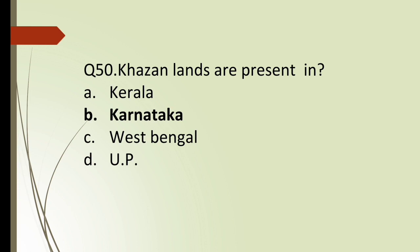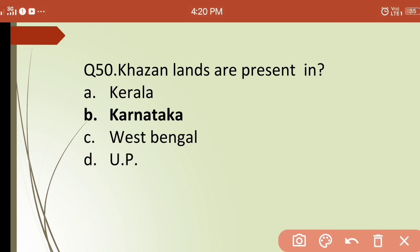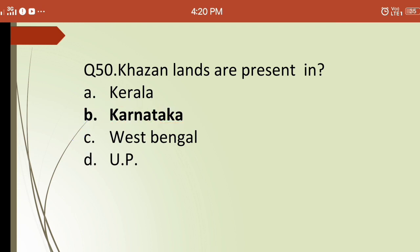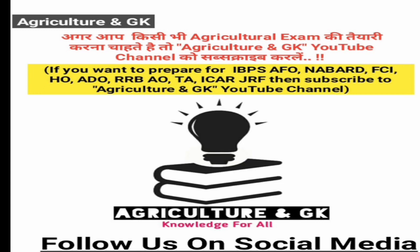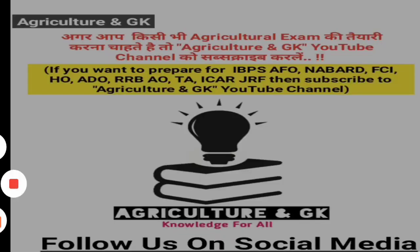Fiftieth question: khazan lands are present in which state? Options are: (a) Kerala, (b) Karnataka, (c) West Bengal, (d) Uttar Pradesh. The correct answer is (b) Karnataka — khazan lands are present in Karnataka. I hope this video helped you. Please like, share, and comment, and subscribe to our channel for more such videos for your ICAR JRF and other fisheries-related exams. Thanks for watching.